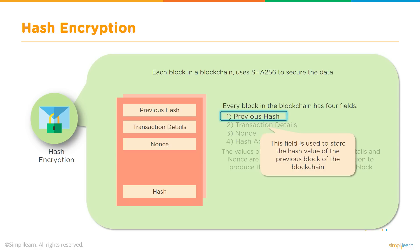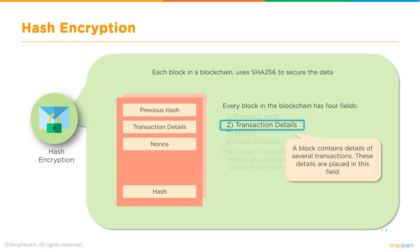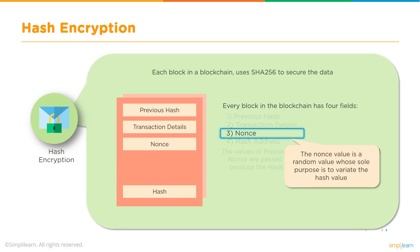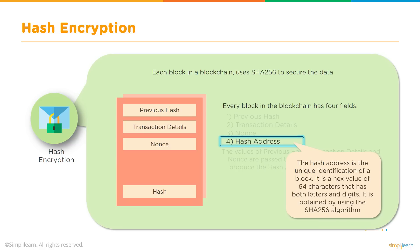What is the previous hash? This field stores the hash value of the previous block in the blockchain, and this is how we link a new block to its previous block. A block always contains an aggregation of several transactions — these details are placed in the transaction details field. Nonce is a random value used to generate a hash which should be less than the target value allotted to a block at a particular time. The hash address is the unique identification of the block — a hex value of 64 characters containing both letters and digits, obtained using two SHA-256 operations.